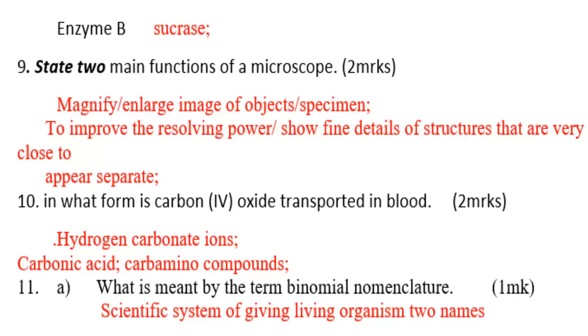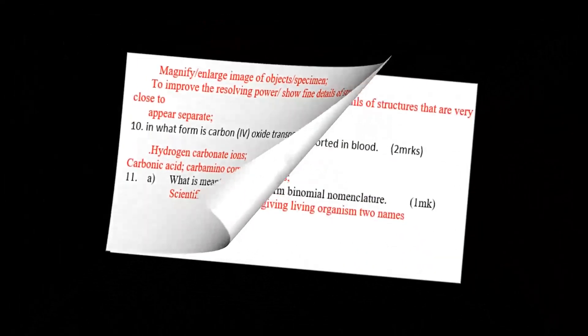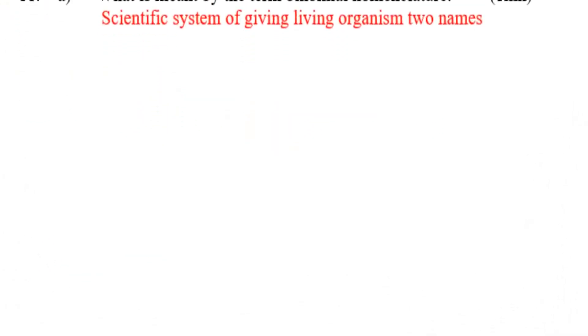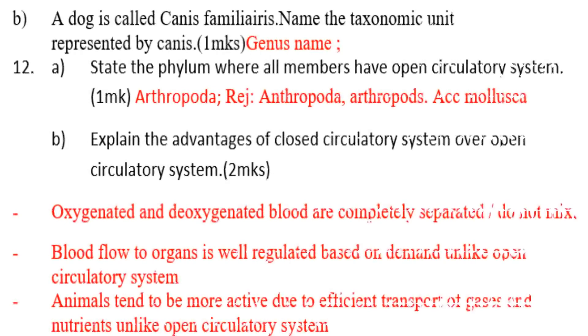Binomial nomenclature is giving an organism two names: genus and species. Name the taxonomic unit represented by Canis — Canis is a genus name.